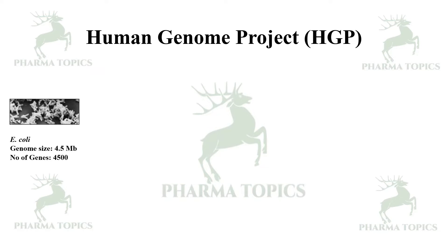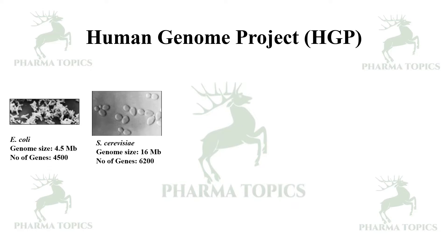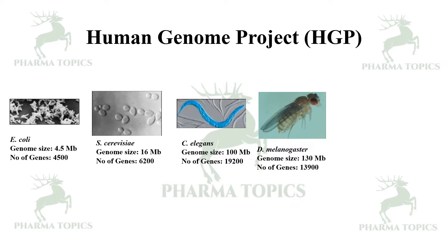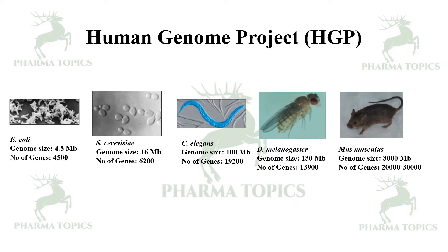In the Human Genome Project, different species and their genes have been identified with the help of microarray technique. For E. coli, the genome size is 4.5 million base pairs with 4,500 genes. Saccharomyces cerevisiae has a genome size of 16 MB with approximately 6,200 genes. C. elegans has a genome size of 100 MB with around 19,200 genes. Drosophila melanogaster has 130 MB and 13,900 genes. Mus musculus has a genome of 3,000 MB with 20,000–30,000 genes, similar to humans, which also have approximately 30,000 genes whose expressions have been studied with these genomic tools.